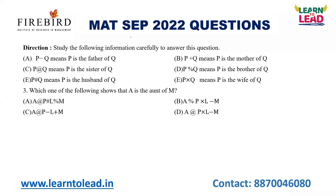Next question: which of the following shows that A is the aunt of M? To check this, A must be female — the 'at' symbol denotes sister. For option A: A is the sister of P, and P is the husband of L (slash = husband), so L is the wife — but then L is female and the brother symbol contradicts this, so option A is eliminated. Option C: A is the sister of P, P is the father of L (minus = father), L is the mother — but this gives two generations, not the aunt relationship.